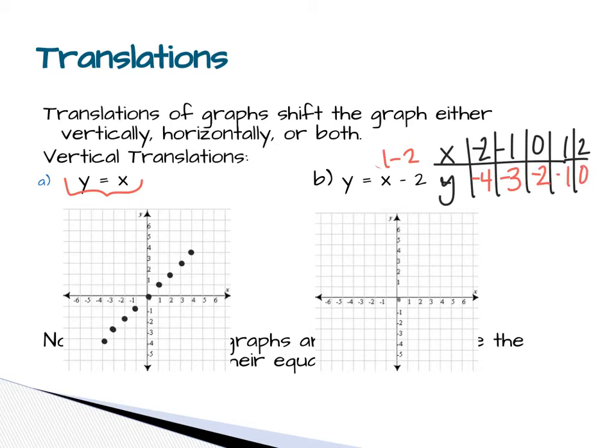When you graph this, you get negative 2, negative 4, negative 1, negative 3, 0, negative 2, 1, negative 1, 2, 0. And then I can continue my line and compare.